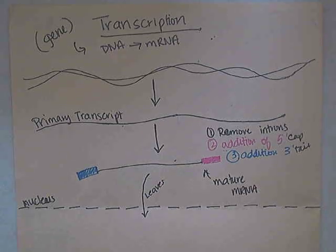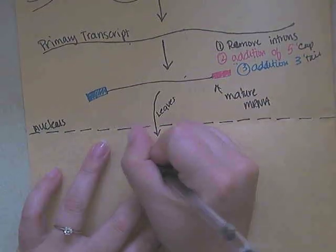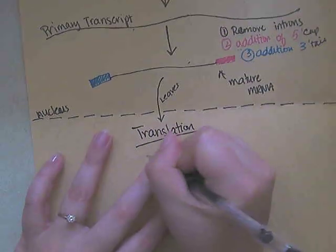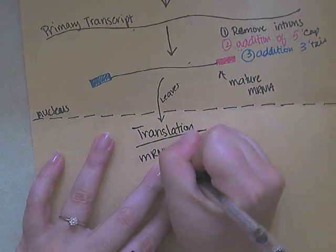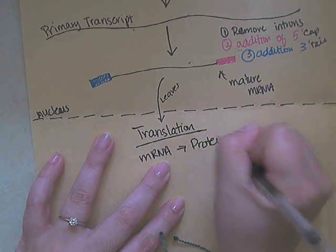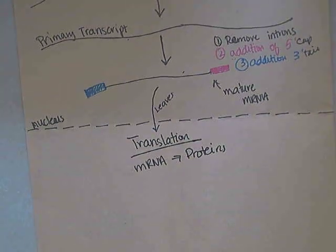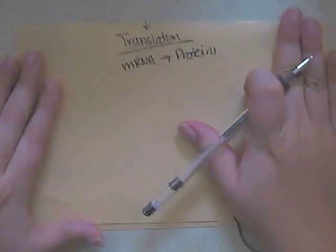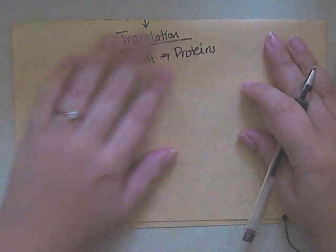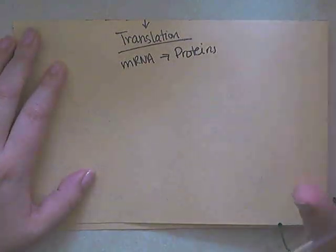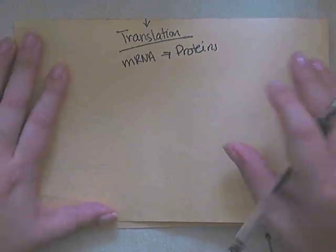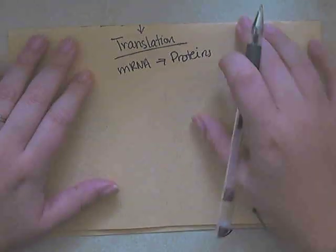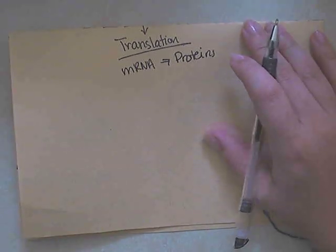Now that is allowed to leave the nucleus, and we get to the next part, which is translation. Translation is the process in which mRNA is going to get converted into proteins. In eukaryotic cells, this process is going to occur either in free-floating ribosomes, which are made of RNA, or it's going to take place on the rough ER. The reason the rough ER is rough is because of the ribosomes that are attached to it.